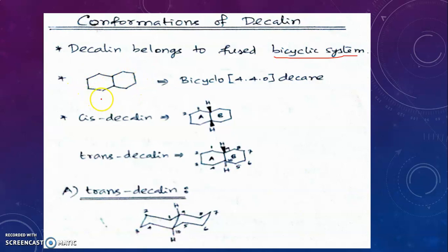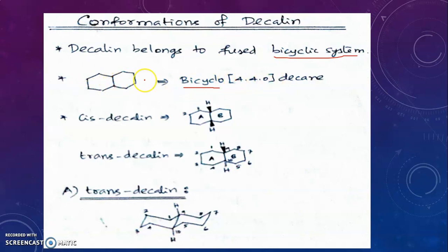What is the IUPAC name of decalin? Since it is a bicyclic compound, we use the prefix bicyclo. The two carbon atoms are fused carbons. In each ring we have four carbon atoms — 1, 2, 3, 4 — and between the two fused carbons there are no carbon atoms. Therefore the name is bicyclo[4.4.0]decane, and since we have 10 carbon atoms total, it is called decaline: bicyclo[4.4.0]decane.